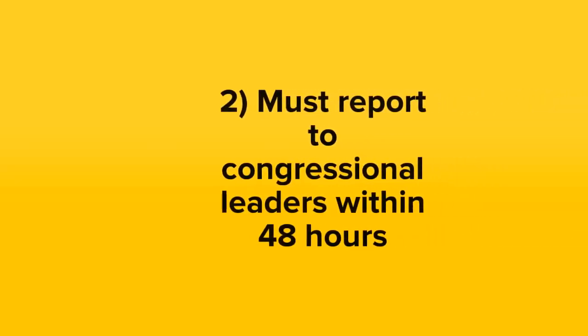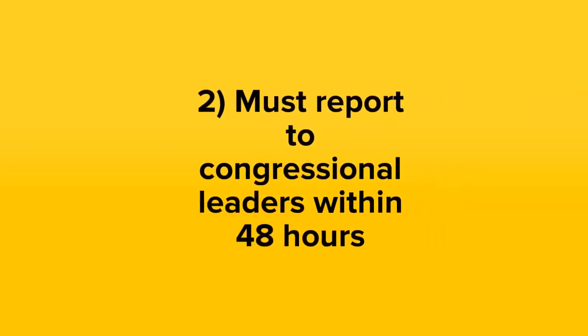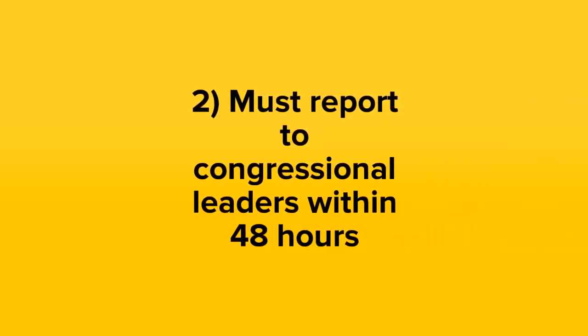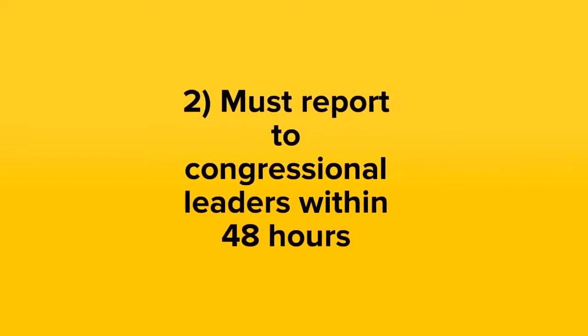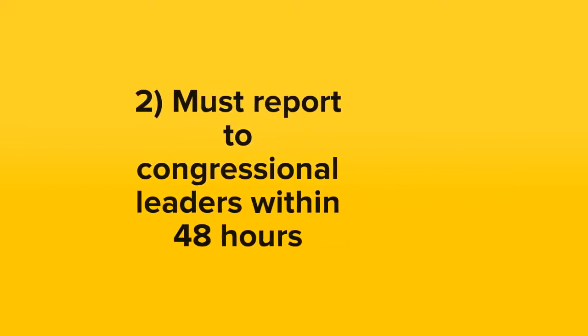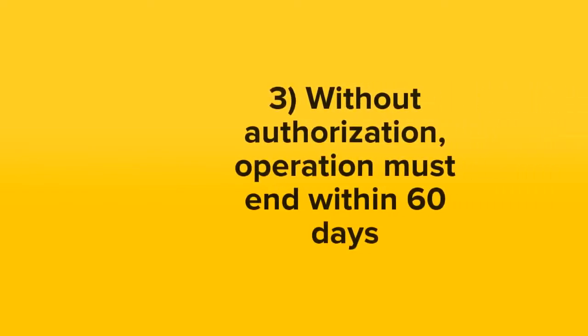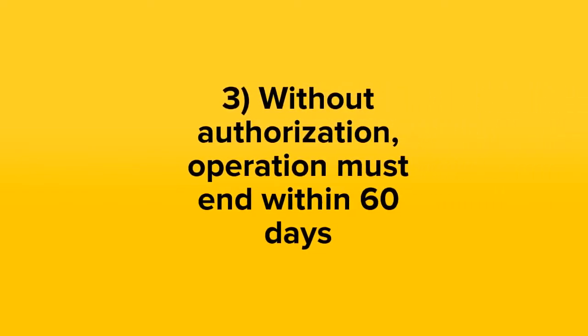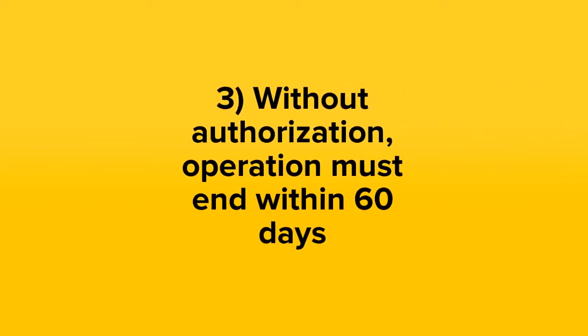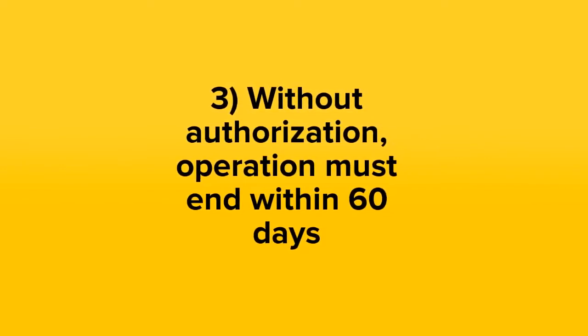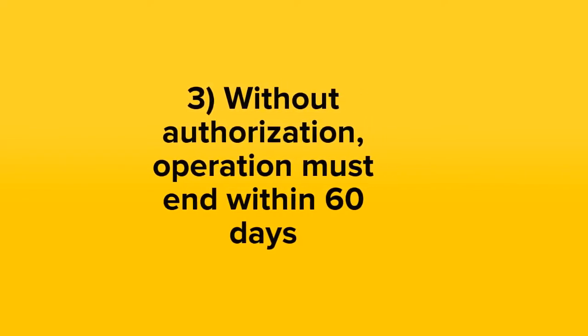The second main provision of the War Powers Act says that the President must report to Congressional leaders within 48 hours of committing troops to hostilities. The third and final main provision of the War Powers Resolution says that if the President does commit troops to hostilities without having obtained Congressional approval, the operation has to end within 60 days.